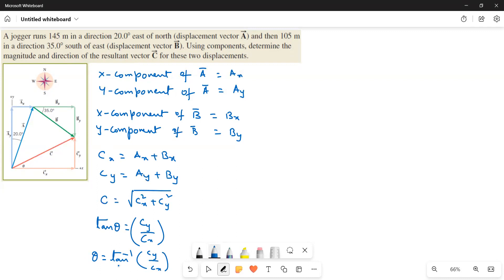This is the problem. Now, write down the values Ax and then Ay, Bx and then By. The displacement value is 145 meters and here x is opposite to the angle, therefore sine 20 degrees.